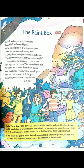Let's read the poem: 'Cobalt and amber and ultramarine, ivory black and emerald green, what shall I paint to give pleasure to you? Paint for me somebody utterly new.' The poet is talking to someone — a friend or someone very close. He mentions cobalt, which is a greenish blue; amber, which is a moderate brown; and ultramarine, which is a vivid blue. These are the different colors referenced in the poem.